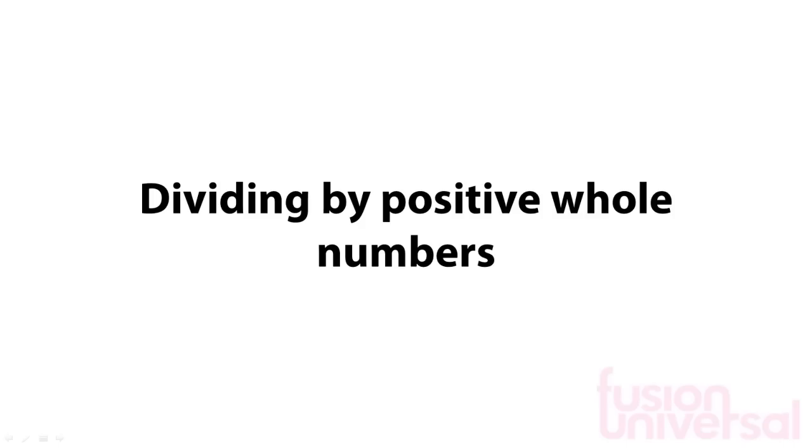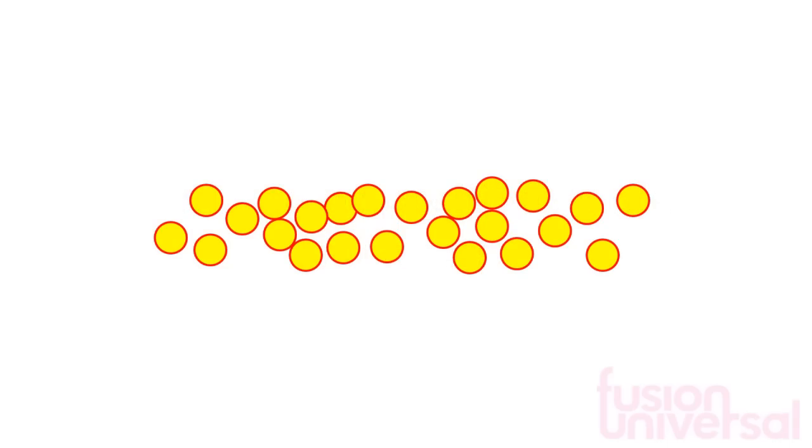We are going to divide numbers by splitting them into equal sized groups. Here are 24 counters. We are going to group these in different ways.